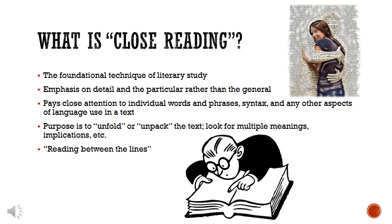Similarly, if you're unfolding something, you have a piece of paper that's been folded up — all its different sides and facets are pressed together, but then you unfold it so we can see more of it at the same time. The purpose of close reading is not to decode or translate — you're not trying to find a one-to-one meaning where X word represents Y idea. You're looking for multiple meanings, implications, complexity. Close reading is the foundational part of reading between the lines: what's being said without being said? What is the author trying to communicate without saying it explicitly?